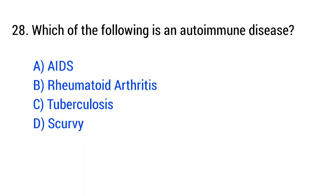Question 28. Which of the following is an autoimmune disease? The right answer is B, rheumatoid arthritis.